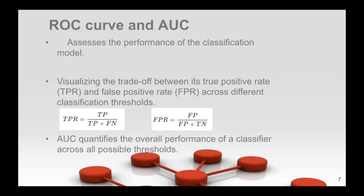And then also ROC curve, which is a receiver operating characteristic curve, and then AUC is just area under curve. So that assesses the performance of the classification model and essentially visualizes the trade-off between its true positive rate or false positive rate across different classification threshold. And by true positive, I'm talking about the probability that an actual positive tests positive. And a false positive or false negative would incorrectly predict a positive or negative class respectively. And these are the two equations we use to get true positive rate, which is true positive over true positive plus false negative, and then false positive rate, which is false positive over false positive plus true negative. And then AUC quantifies the overall performance of a classifier across all possible thresholds.